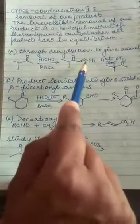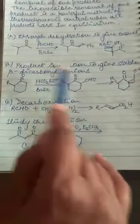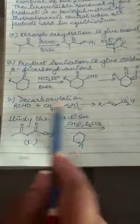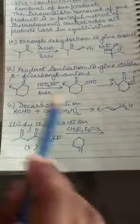The aldol is dehydrated and we give alpha-beta unsaturated compounds. This is how can we do this? Equilibrium forward direction shifts. By the product ionization to give the stable beta-dicarbonyl ions. And we can do decarboxylation. Now we will study the reaction to understand.